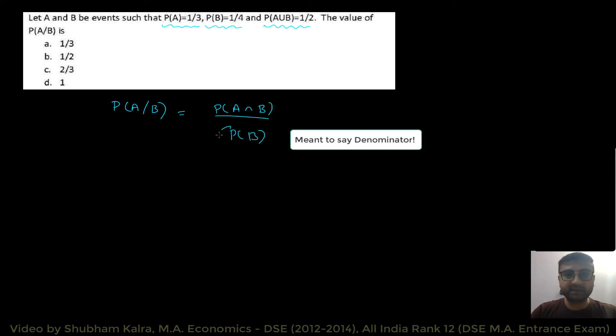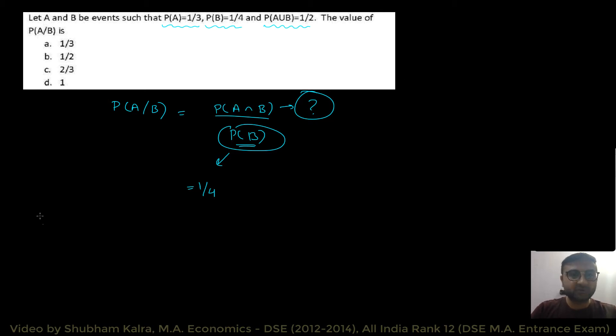So, we know that the probability A given B is equal to probability of A intersection B divided by probability of B. Now, let's see, the numerator of this is directly given. That is equal to 1 by 4. So, this is something which is directly given to us. This is something which we do not know. But, we have enough information given to us for the question of A intersection B.